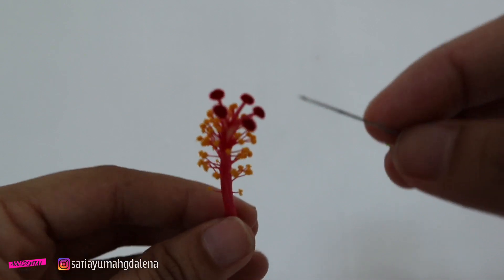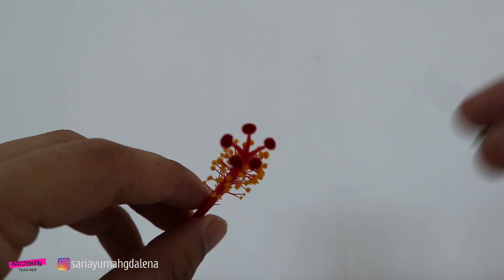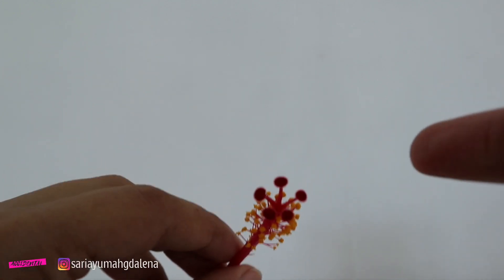And the anther is found on top of the filament. It contains pollen sacs which release pollen grains when ripe.